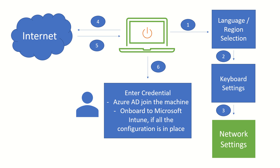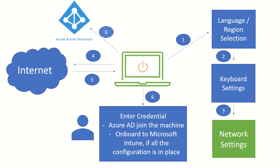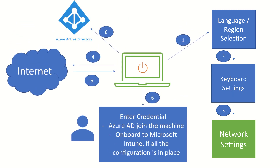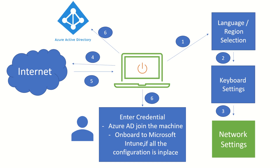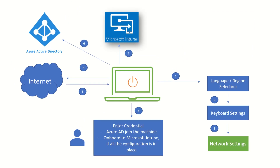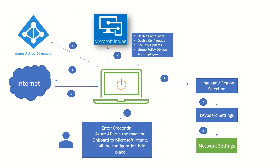Relating this to on-prem solutions: previously the machine was getting joined to Active Directory; with Windows Autopilot, the machine gets joined to Azure Active Directory. You can also configure hybrid Azure AD join — a different use case to be covered later. With proper Intune licenses assigned to the user and automatic enrollment enabled, in the same session the machine will also get onboarded to Intune, your endpoint manager solution.